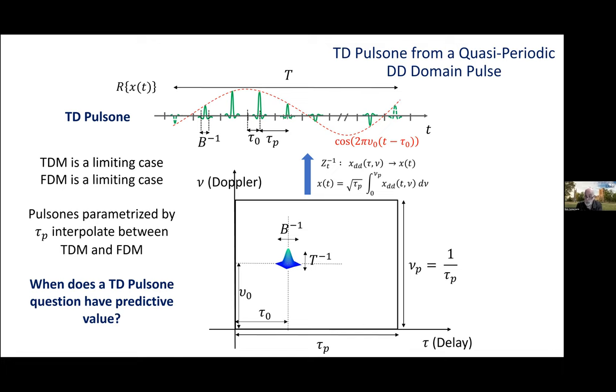The time domain realization x of t, it's a pulse train, a finite duration T, with each pulse in the train spread over time duration 1 over B. Consecutive pulses are separated by the delay period tau_p. And if you move the pulse location, you displace the time domain pulsone in time.